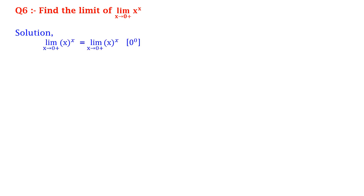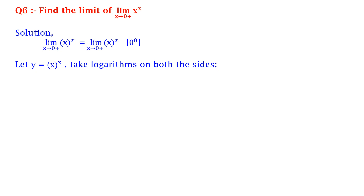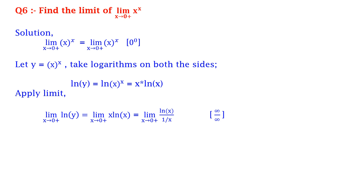Sixth, find the limit: limit x tends to 0+ of x raised to x. Solution: here x^x is of the form 0 raised to 0; we cannot solve this directly. So we again let y equal to x^x and take logarithm on both sides, which gives us ln y equals x times ln x. Now apply the limit: limit x tends to 0+ of ln y equals limit x tends to 0+ of x times ln x.